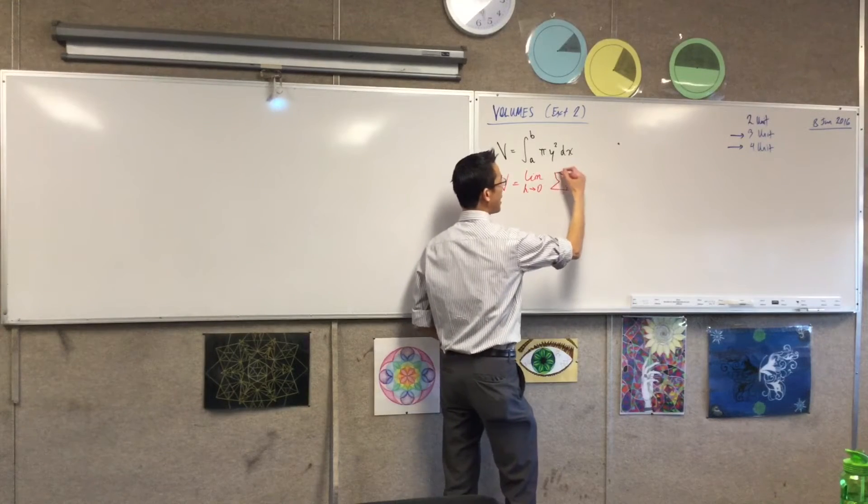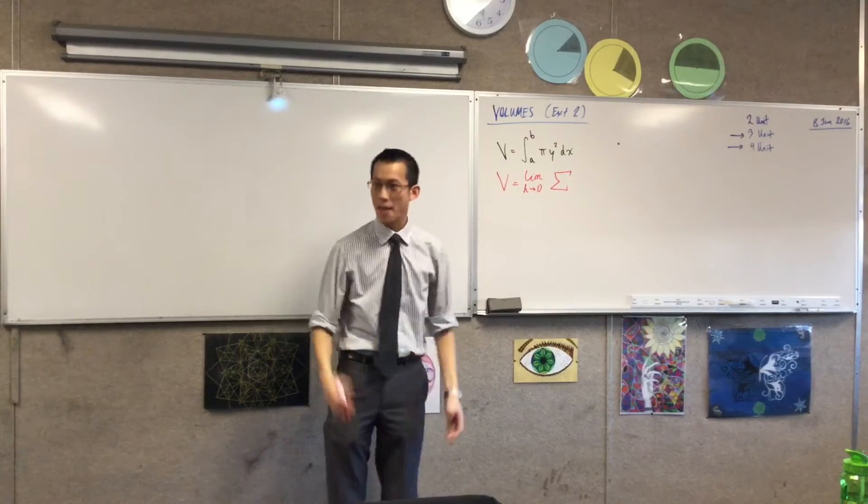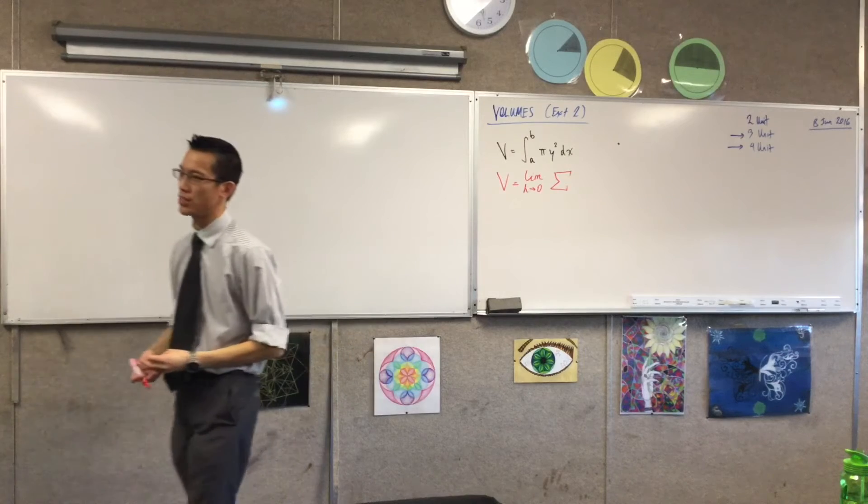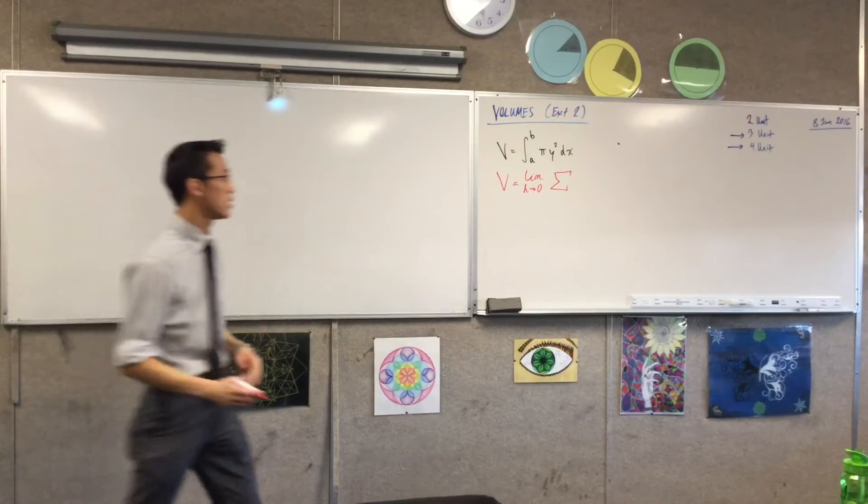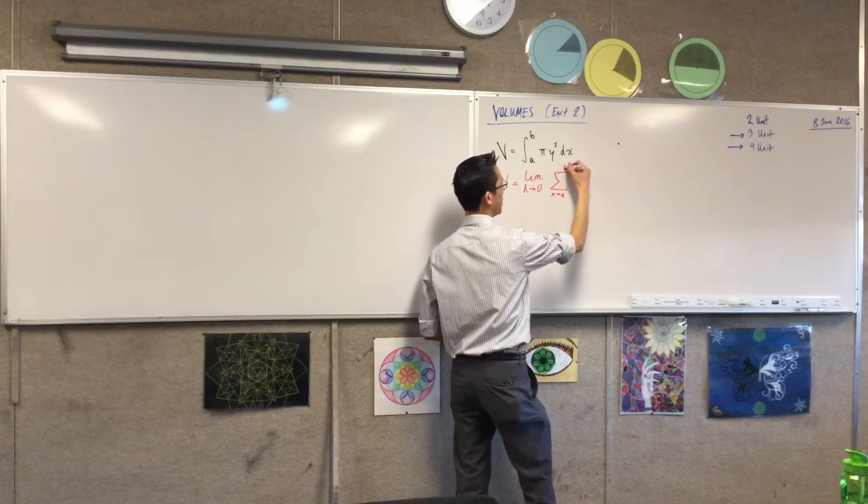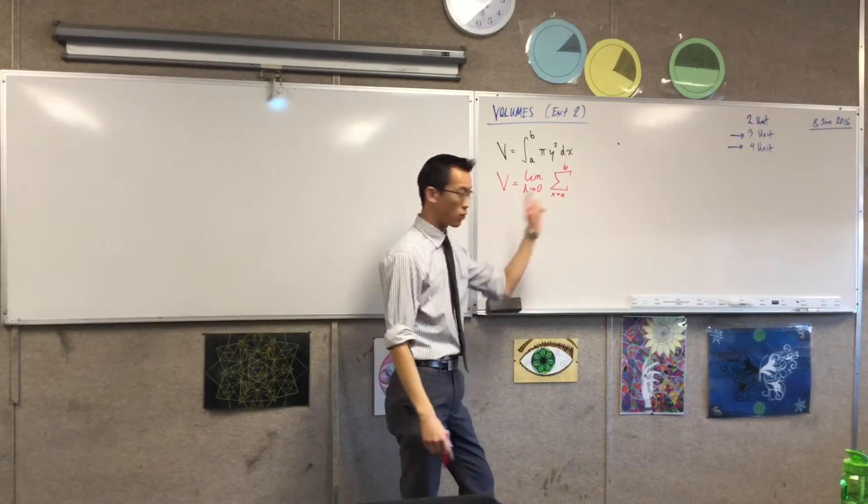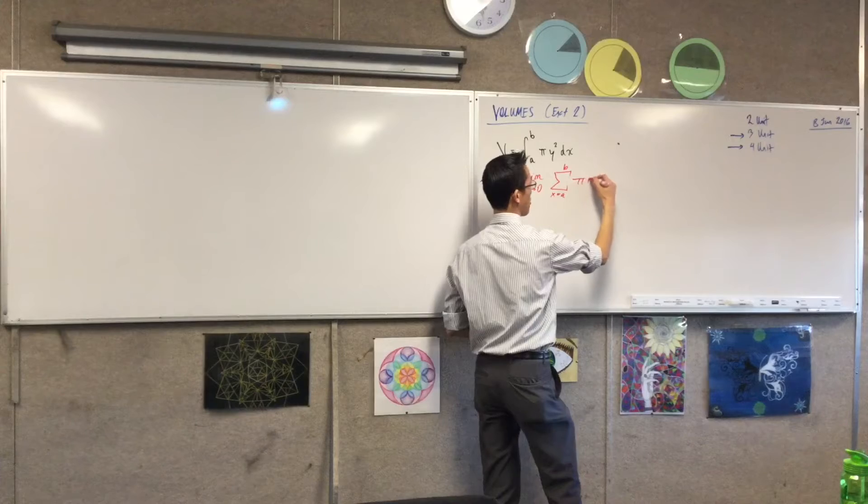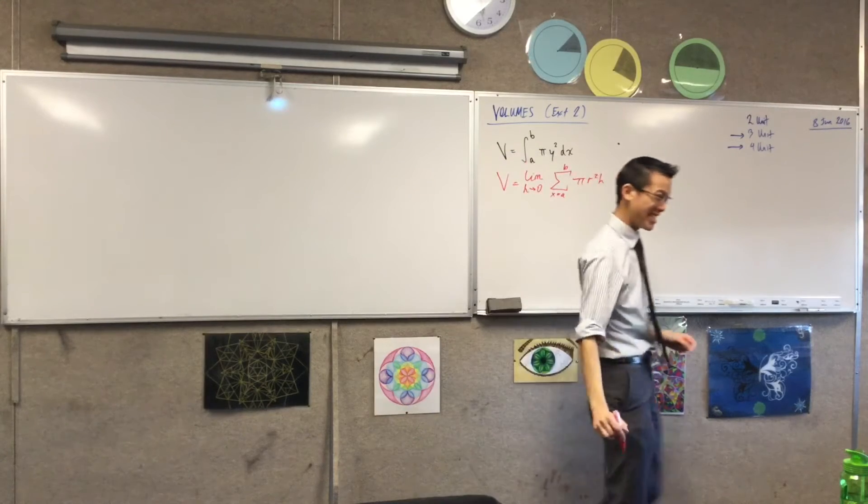I'm going to hit a limit as h approaches 0, so I'm going to relabel this h in a second. And then I'm adding things up. I am actually adding up an infinite series of things. That's what volumes is. So I'm going to go from some x boundary here. And then, of course, in here, I've got my volume of a cylinder.